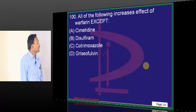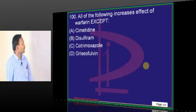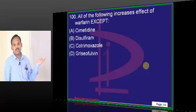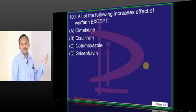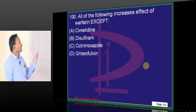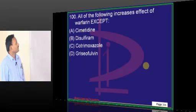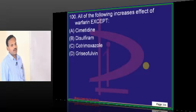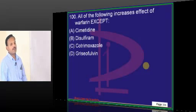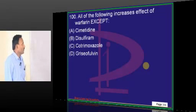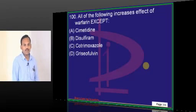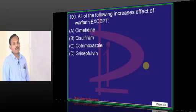All of the following increases the effect of warfarin except — the options are slightly changed. Cimetidine is again a CYP3A4 and CYP2C9 inhibitor; it will elevate the levels of warfarin. Disulfiram is also an inhibitor of CYP enzymes, but to a lesser extent than cimetidine. Cotrimoxazole also has an ability to inhibit enzymes because of the sulfonamide component.